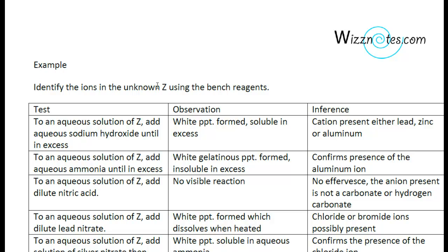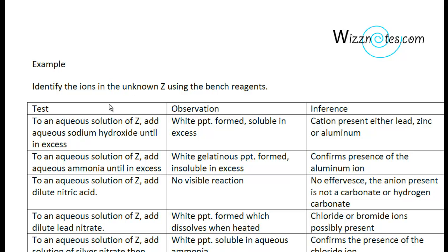In this case the observation is a white precipitate formed and this precipitate is soluble in excess. So we can infer that either the lead, zinc, or aluminum ions are present. Since we know that either the lead, zinc, or aluminum ions are present, then we have to identify which one is there.